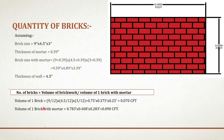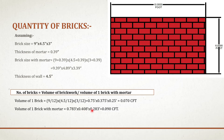Similarly, if you divide the mortar-included dimensions by 12, you will get the volume of one brick with mortar in cubic foot. Multiplying those three values gives 0.090 cubic foot.